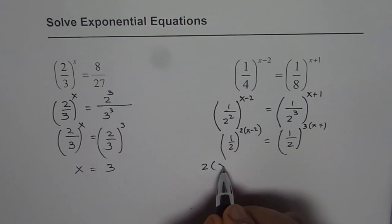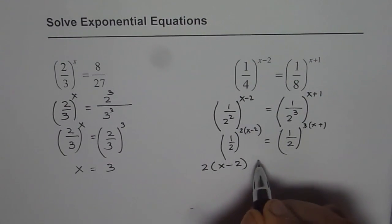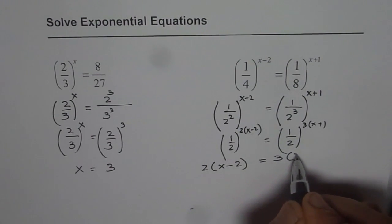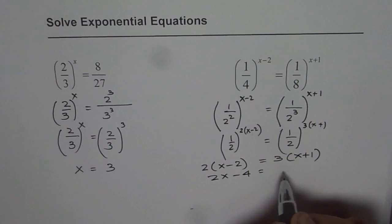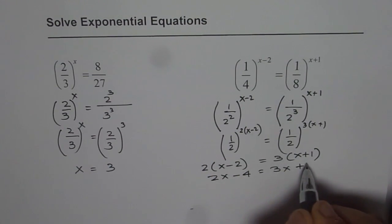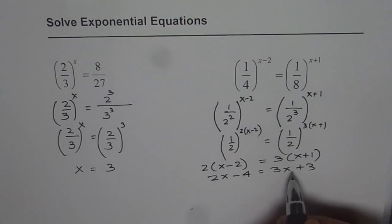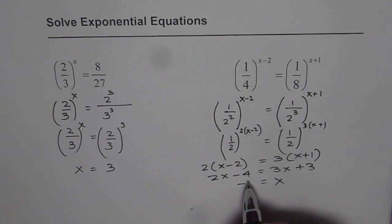That is, 2 times x minus 2 should equal 3 times x plus 1, which is 2x minus 4 equals 3x plus 3. If I take 2x on this side, we get x and 3 on this side, we get minus 7.